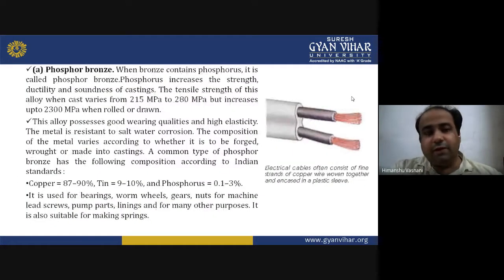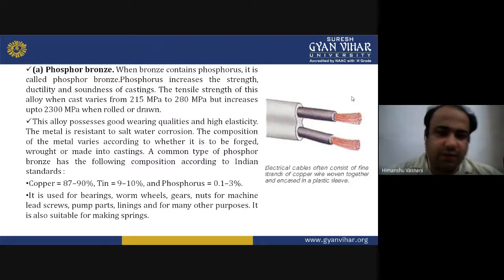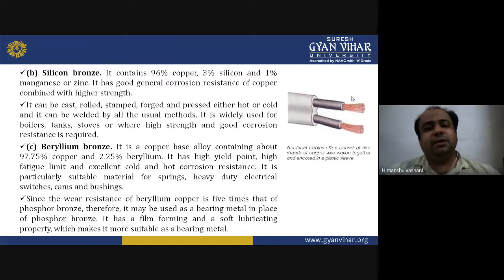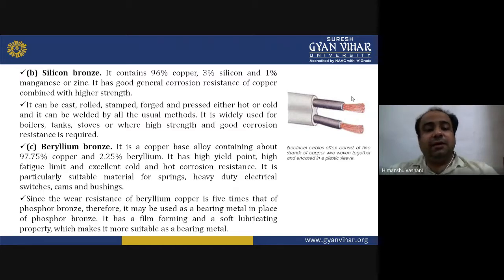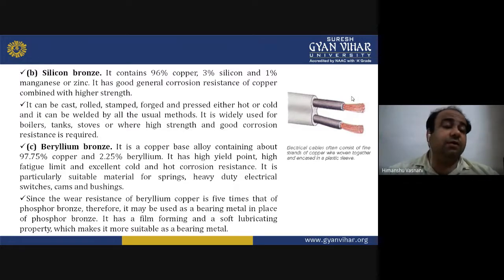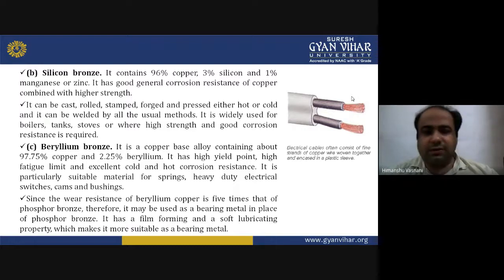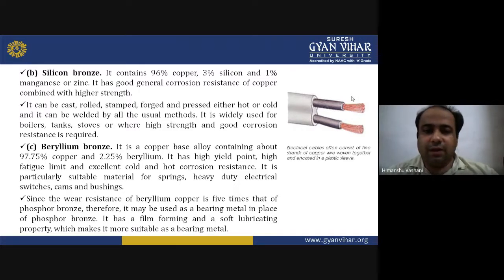Silicon bronze is also a common material. It contains 96% copper, 3% silicon and 1% manganese or zinc. It has good general corrosion resistance combined with higher strength. It can be carved, rolled, stamped, forged and pressed either hot or cold, and can be welded by all usual methods. It is widely used for boilers, tanks and stoves where high strength and good corrosion resistance are required.